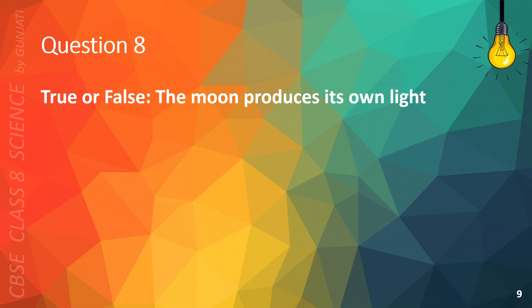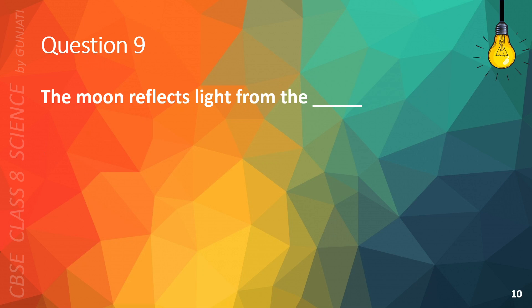Question 8. True or false? The Moon produces its own light. The correct answer is B. False.